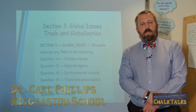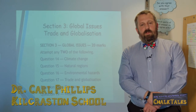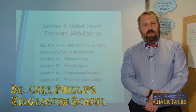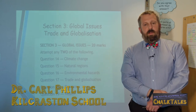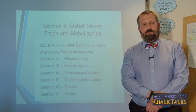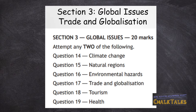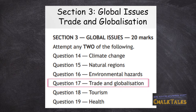Hello. In this video, we're going to be revising the Trade and Globalisation topic of the National Five Geography course. This is part of the Global Issues Unit, which you will find in Section 3 of the exam paper. Here you will be given a choice of two questions from a list of six to answer, and Trade and Globalisation is normally the fourth on that list of six.